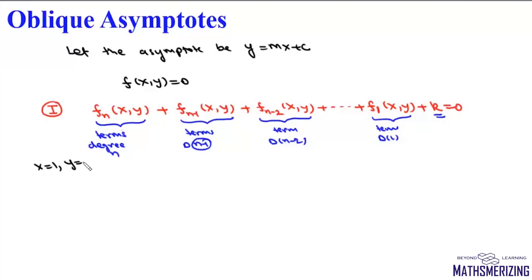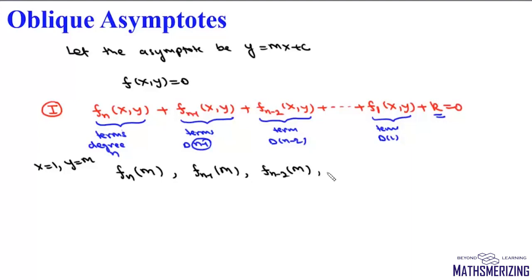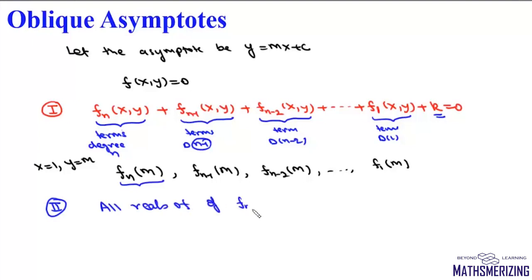After grouping, we put x as 1 and y as m, writing f_n(m), f_{n-1}(m), f_{n-2}(m), down to f_1(m). The second step is to take the function of highest degree n and find all the real roots of f_n(m) = 0.